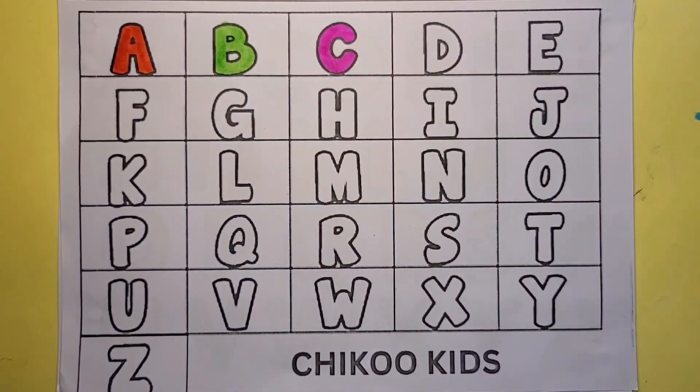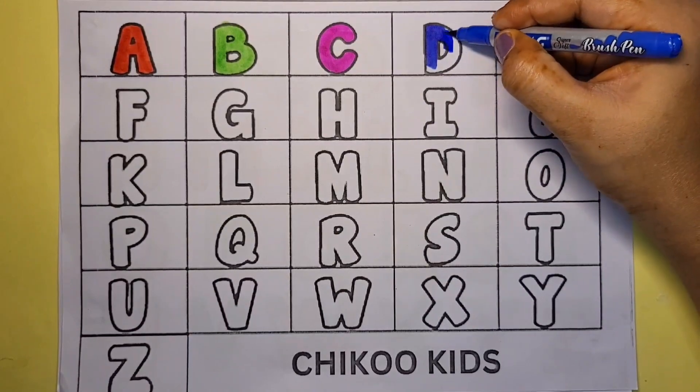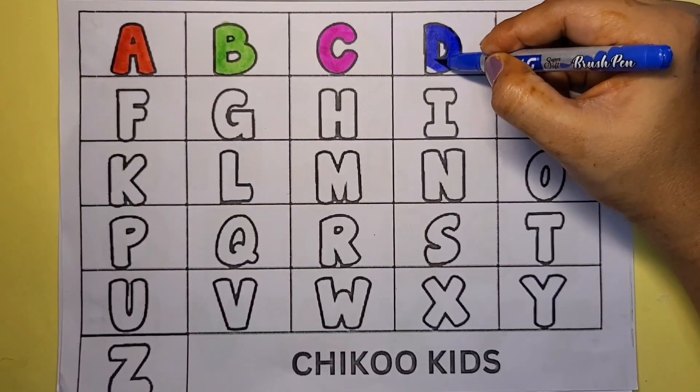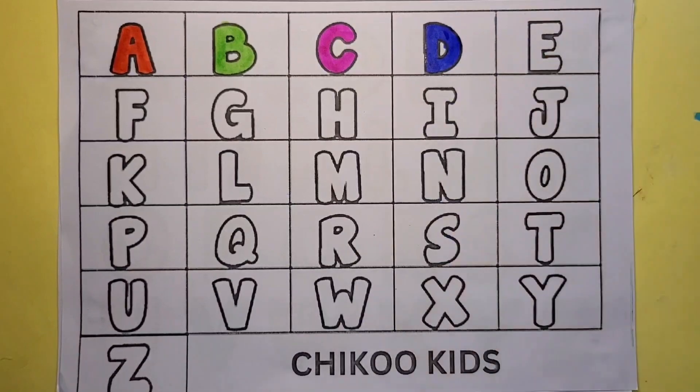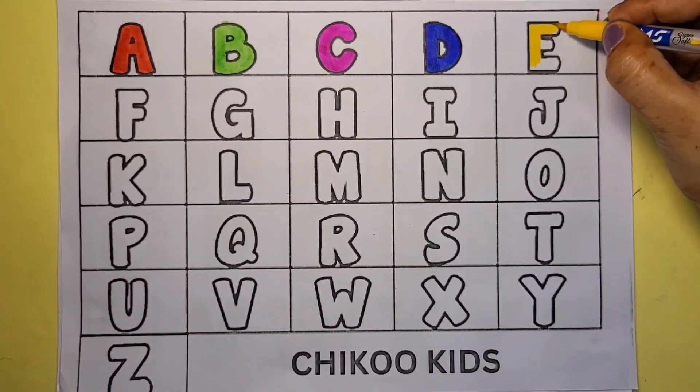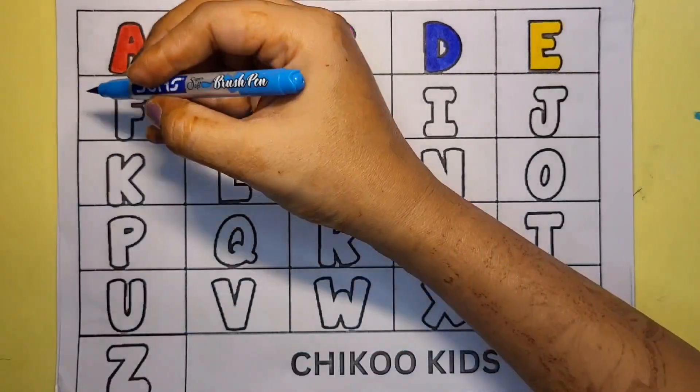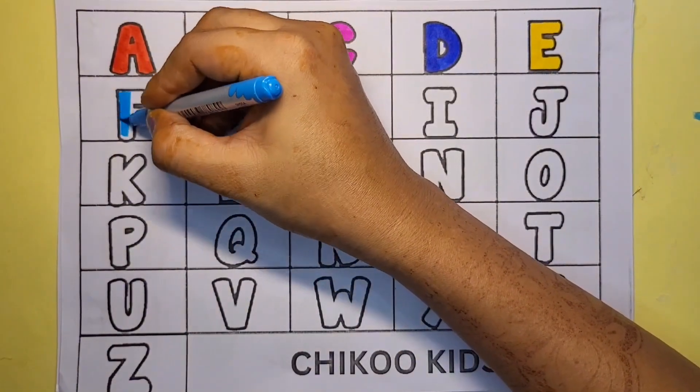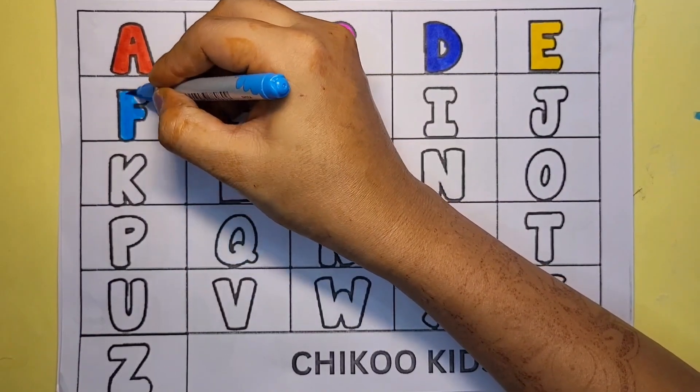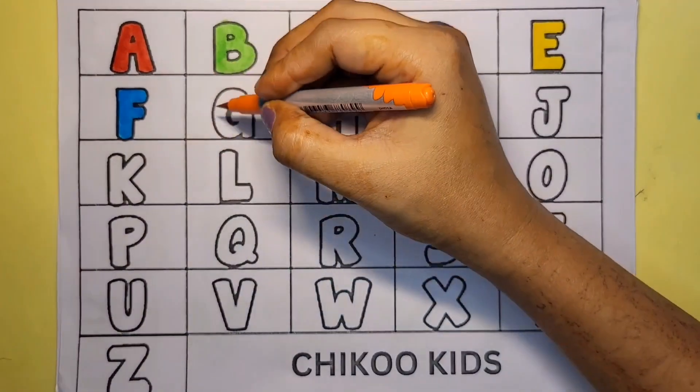Blue color D. D for donuts. Yellow color E. E for egg. Light blue color F. F for fish.